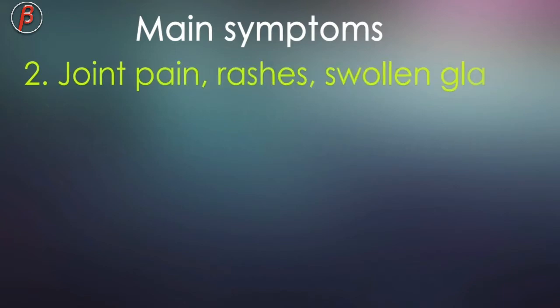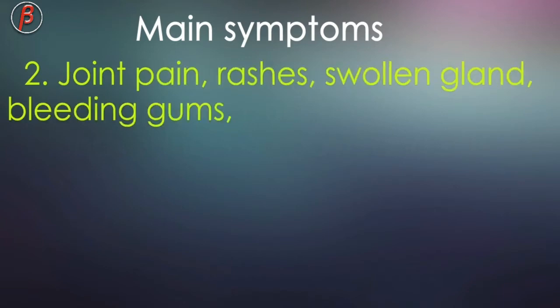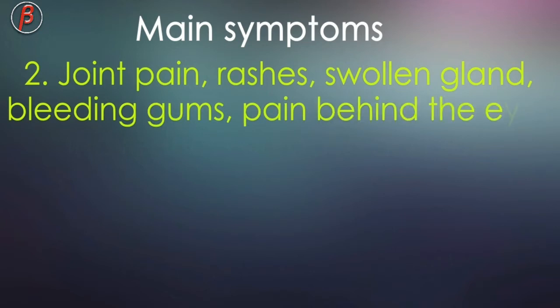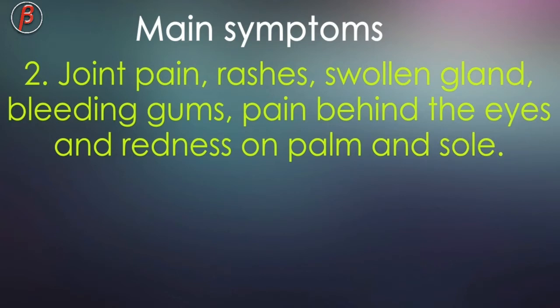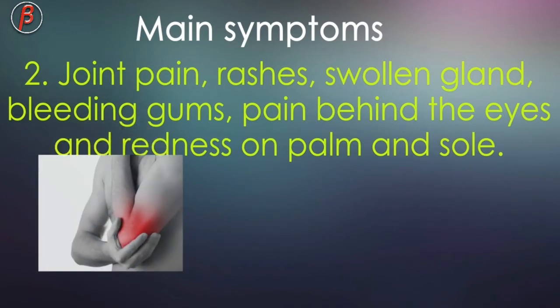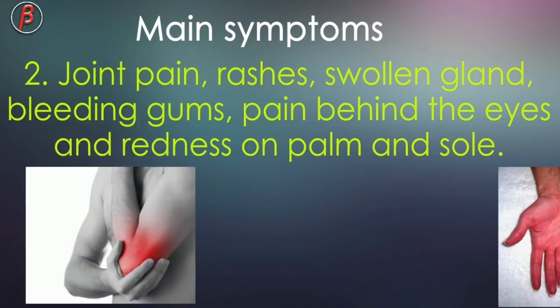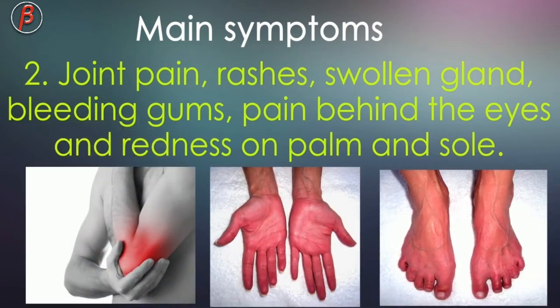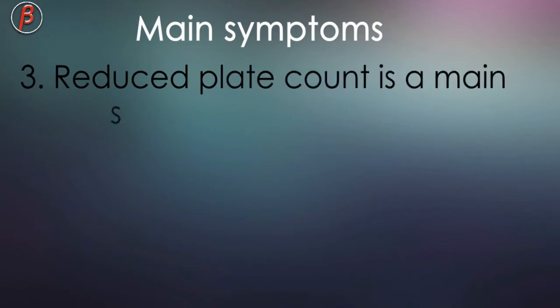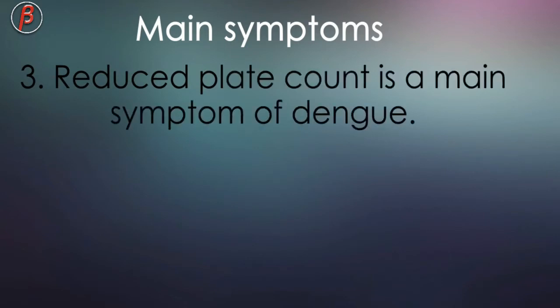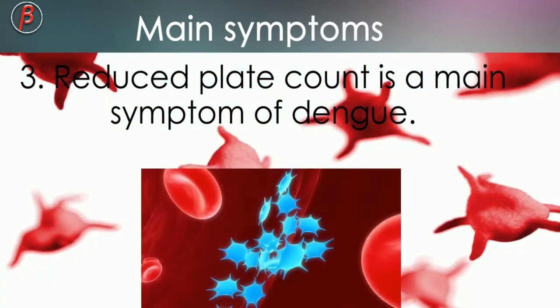Other symptoms of dengue include joint pain, rashes, swollen glands, bleeding gums, pain behind the eye, and redness on the palm and sole. One of the main symptoms of dengue is a reduced platelet count — the platelet count drastically decreases in the blood.